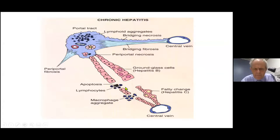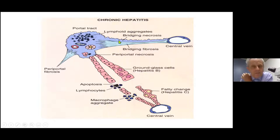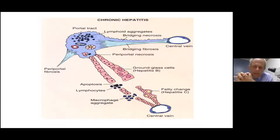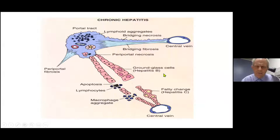Ultimately, if the process is not stopped, architectural change occurs and the endpoint is cirrhosis. As soon as you see this sort of expanded portal tract, that almost by definition implies a chronic hepatitic process. Notice you still have lobular inflammation and fatty change, and you should then look for the cause. It is one thing saying it's a chronic hepatitis — the important thing is to try and identify the etiology, because as I say to registrars, cirrhosis alone is only half the diagnosis.